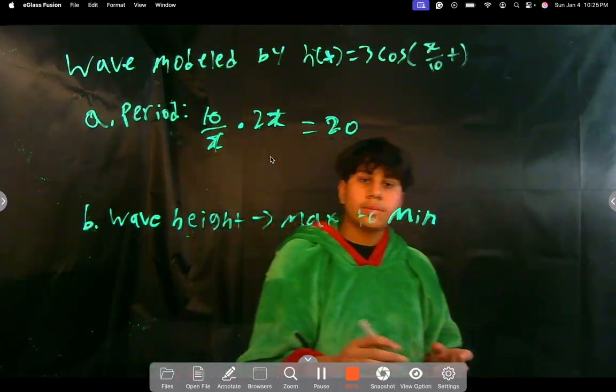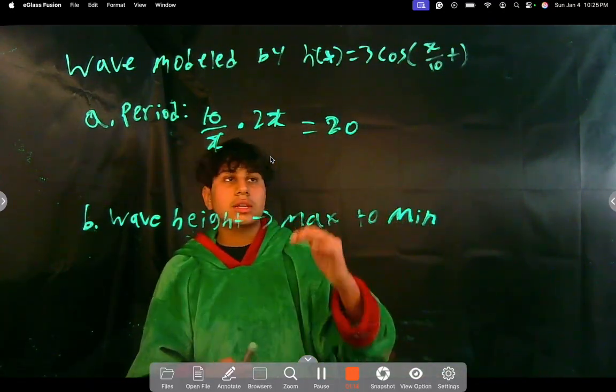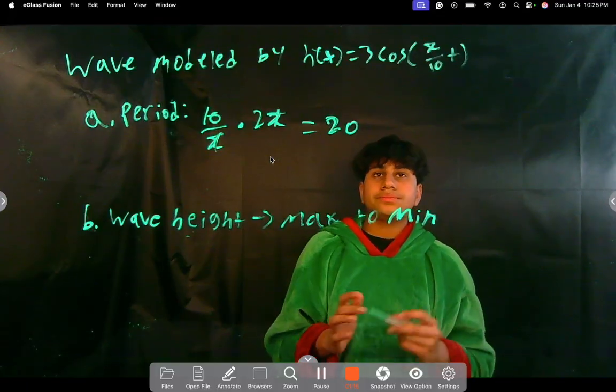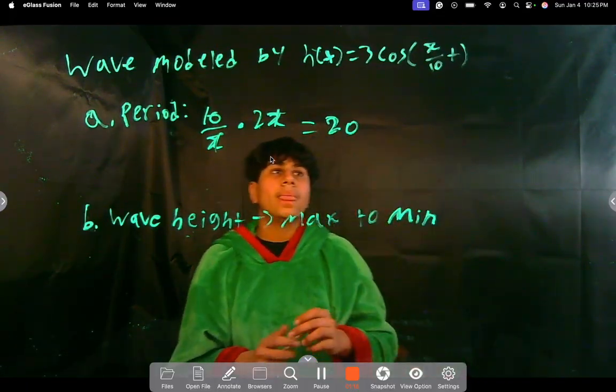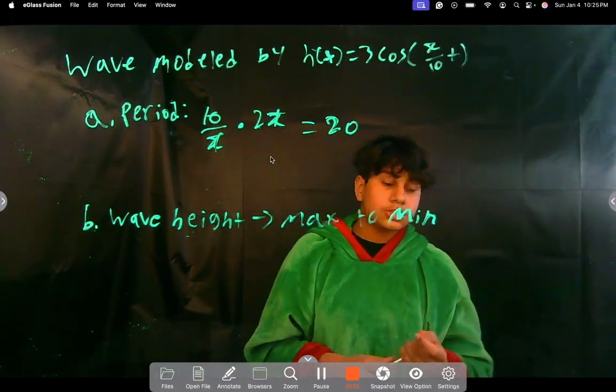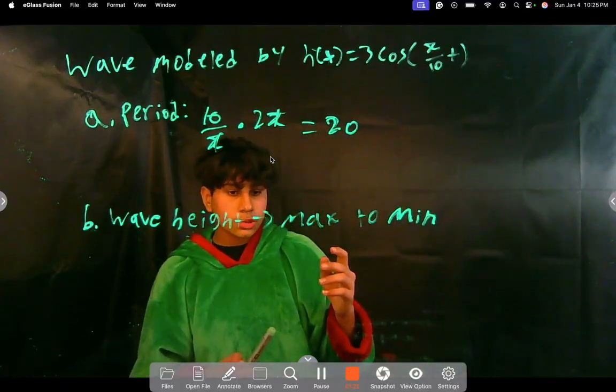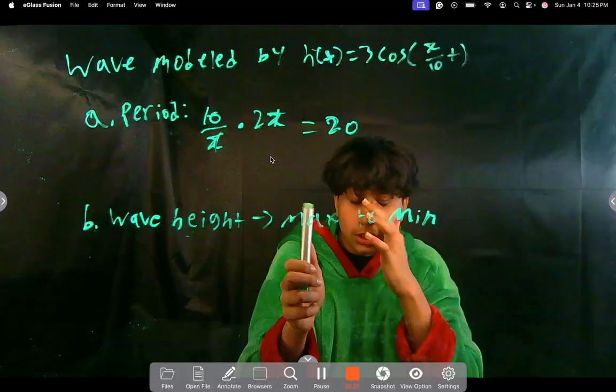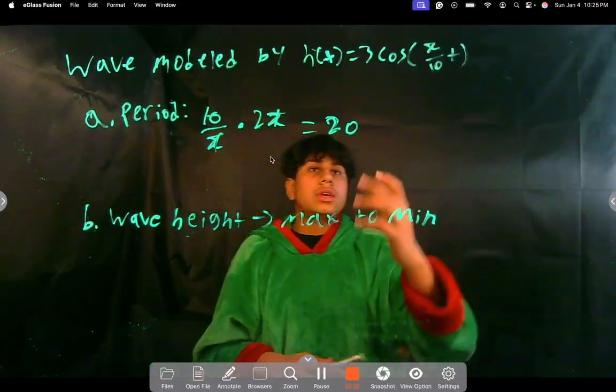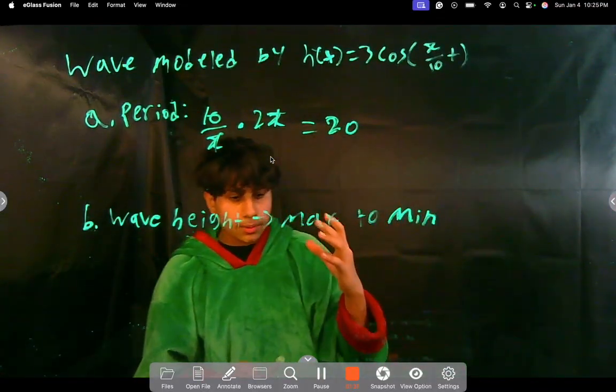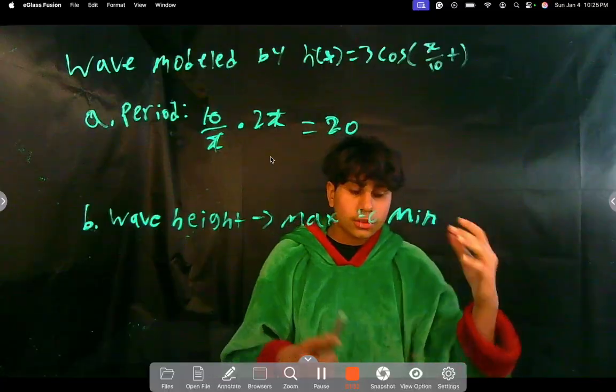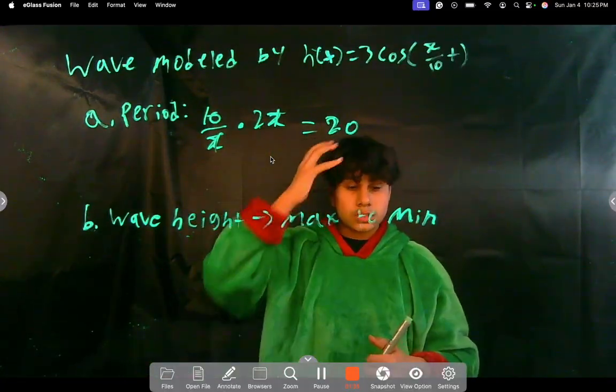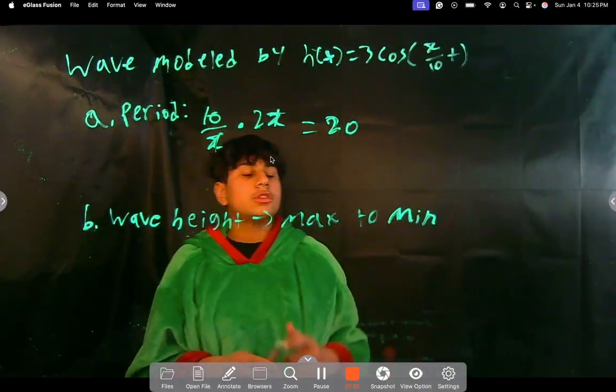Now we just have to find the wave height. That's the difference between the max and min height. How are we going to find that? Well, we know that in general, a cosine graph has a range from 1 to -1, right? So here we're just going to multiply the dilation on the vertical points—the y-axis, the range—by whatever's being multiplied by the original.